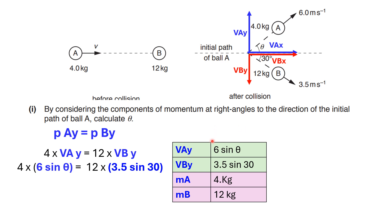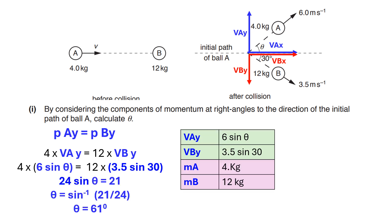In this step, we do substitutions for the values of masses and velocity components in the vertical or y direction. Here we have the values. Using our calculator in degree mode, we calculate the inverse sine of 21 divided by 24, and here is the angle: 61 degrees.